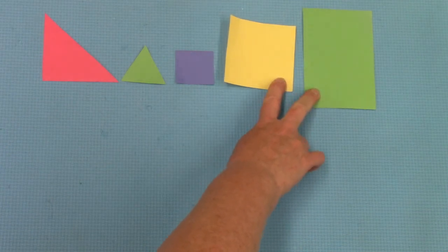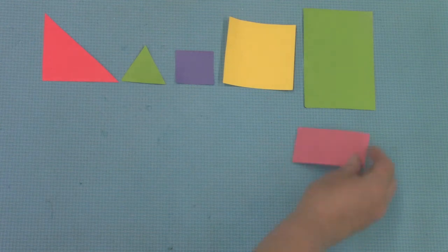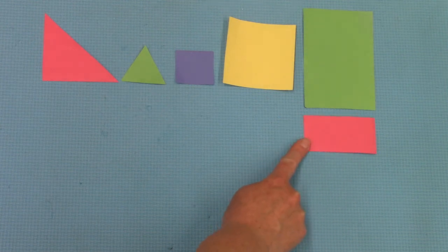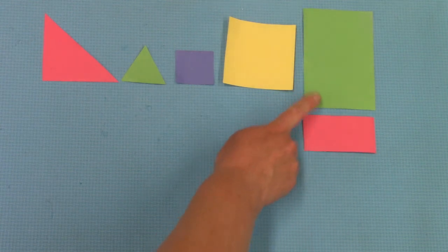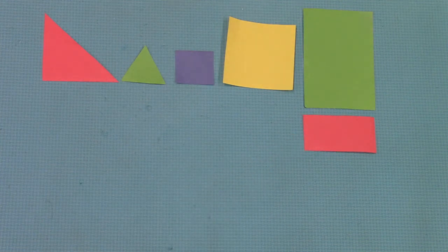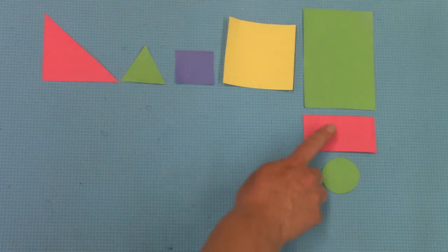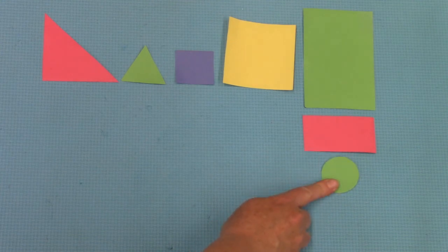They're the same size but different shape and color. What two ways are these different? Color and size. How are they the same? That's right. It's shape. How are these two different? Color and shape.